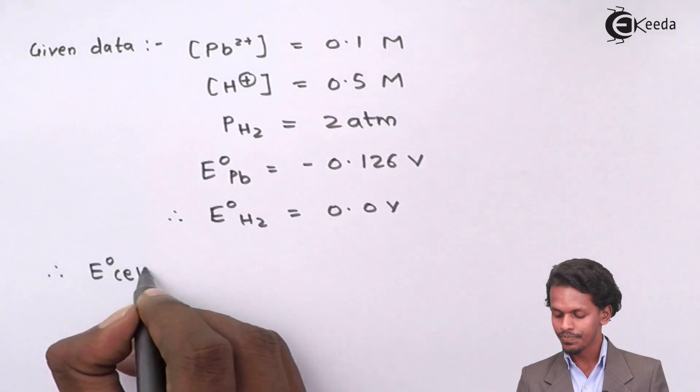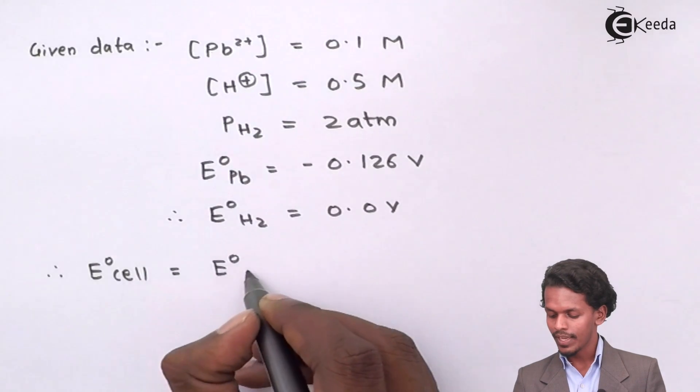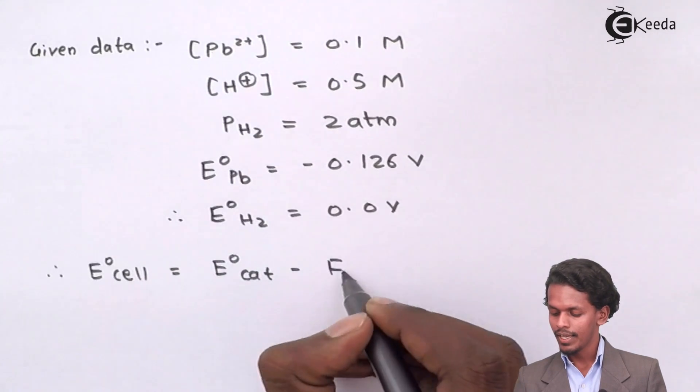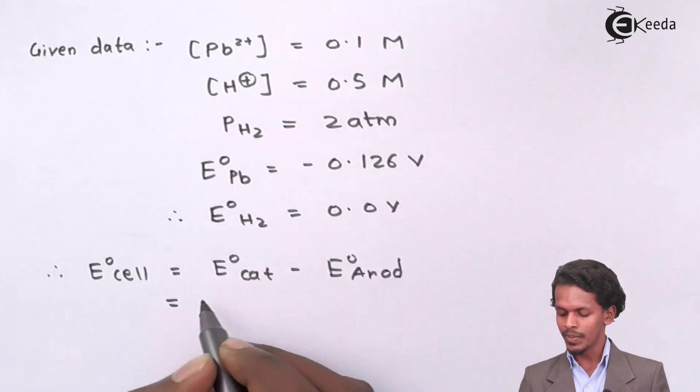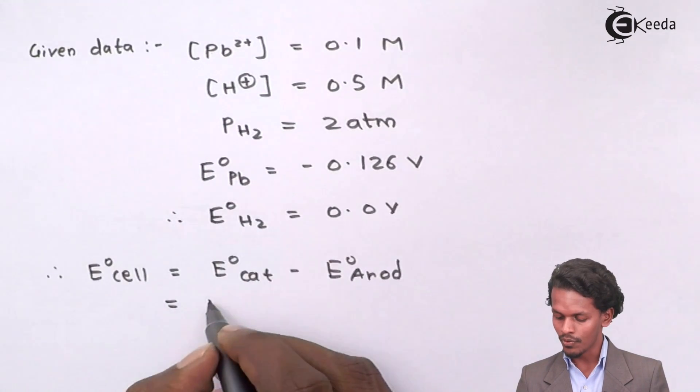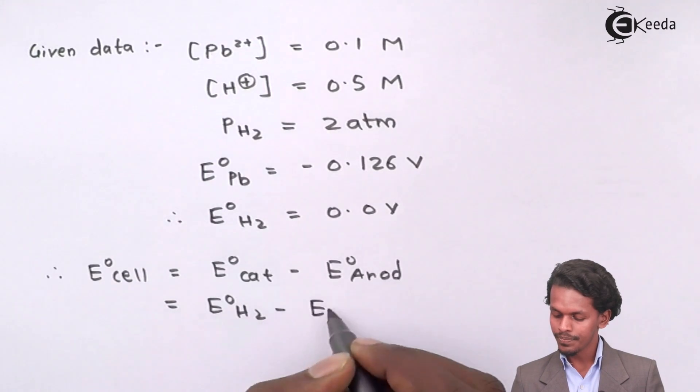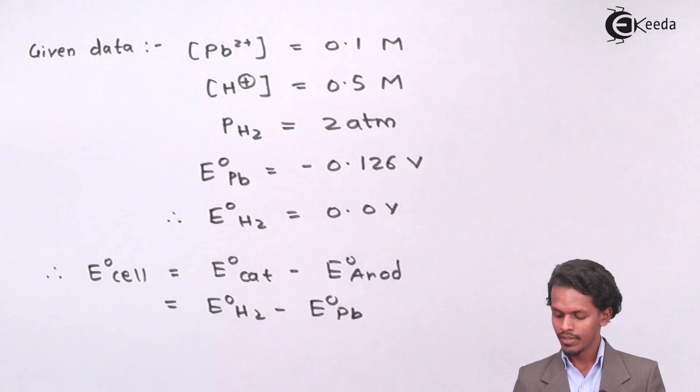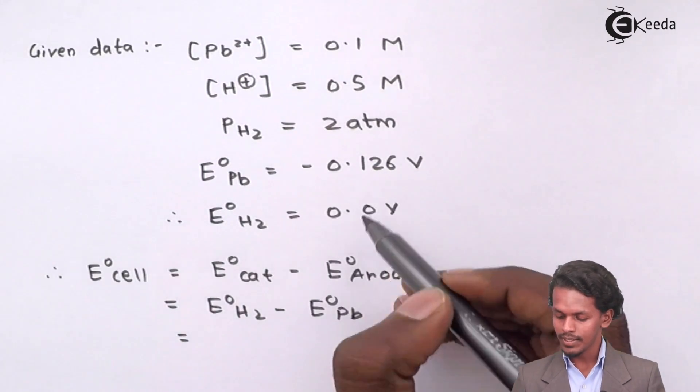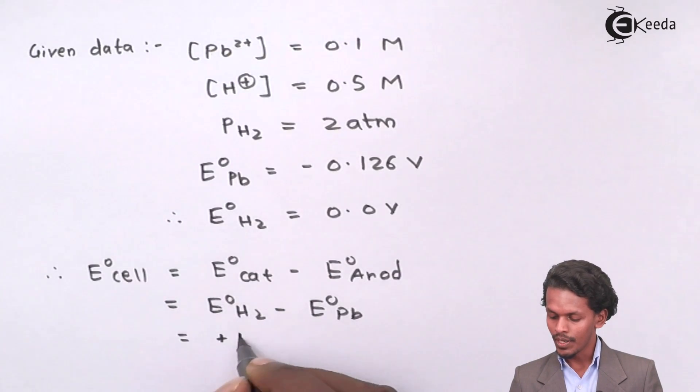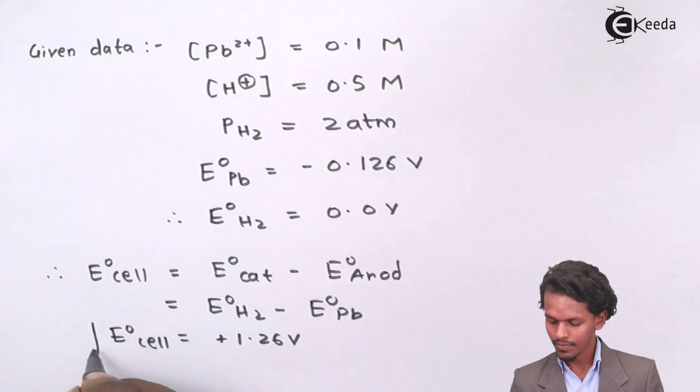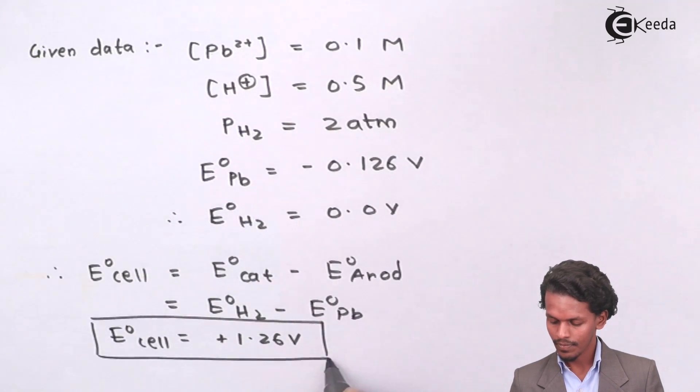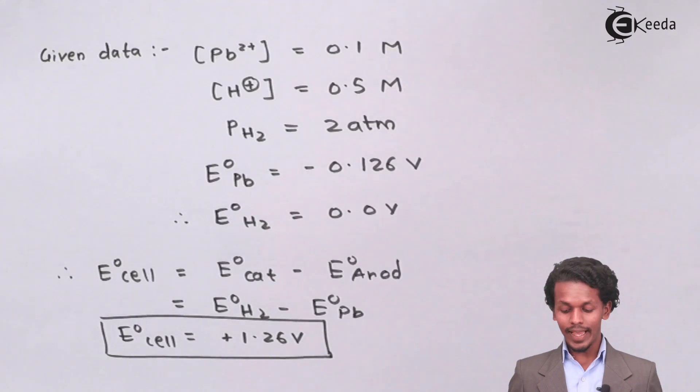Therefore, to make the E° cell positive, we have E° of cathode minus E° of anode. In this case, the cathode is H2, so E° of H2 minus E° of Pb gives us plus 1.26 volt.